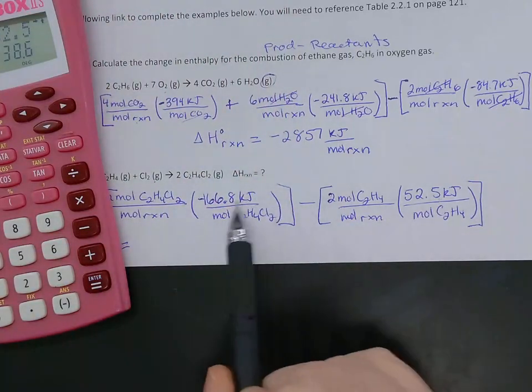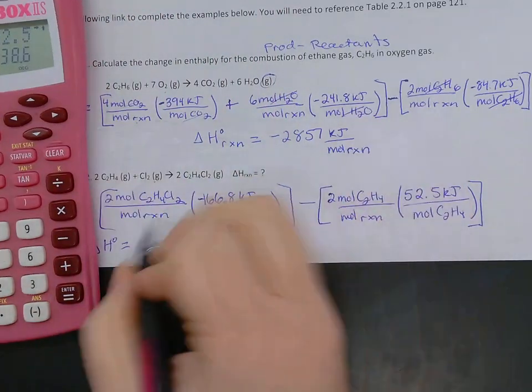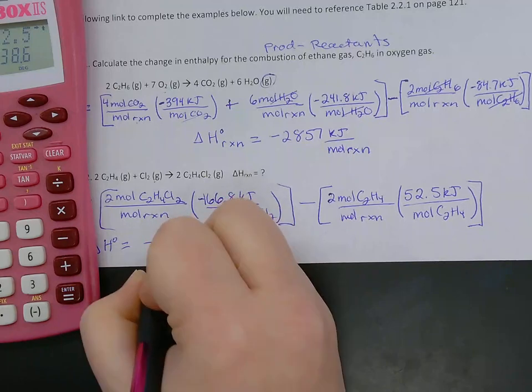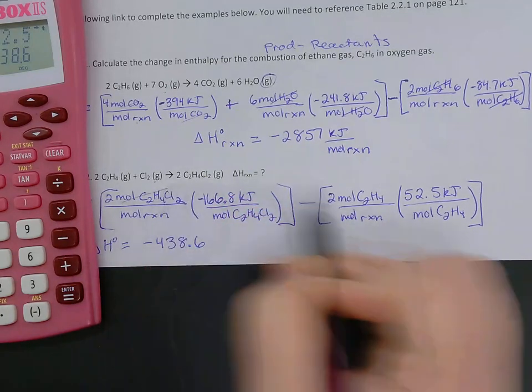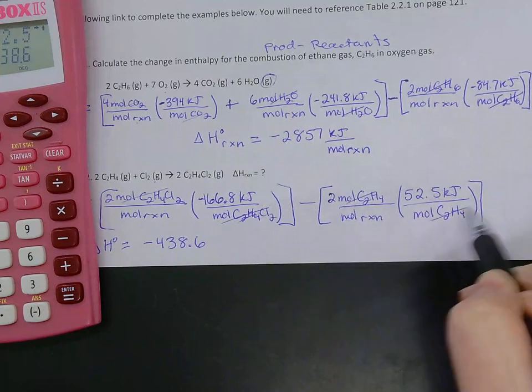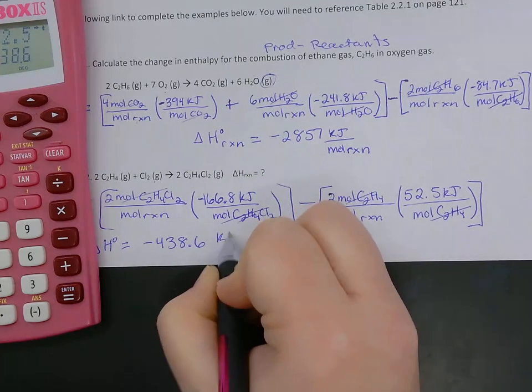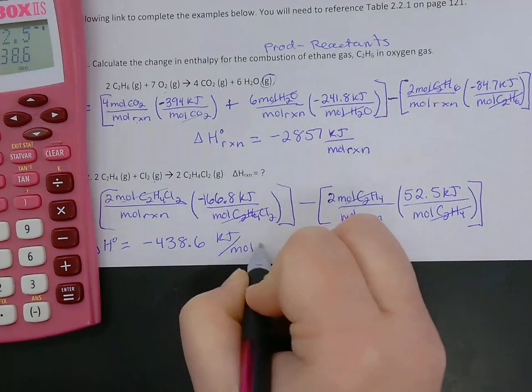Again, we pay attention to our decimal places. We've got one on each, so we're going to keep our decimal, negative 438.6. And then our units, moles of our chemicals cancel. We're left with kilojoules per mole reaction.